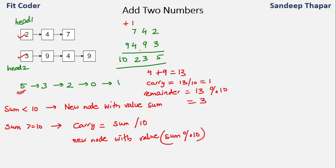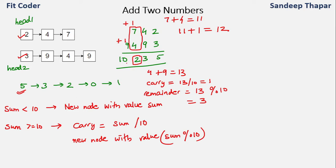Moving to the next nodes, we have 7 plus 4 equals 11, plus the carry of 1 gives 12. Since 12 is greater than 10, the new carry is 12/10 = 1 and the new node value is 12 mod 10 = 2. The addition is elementary mathematics; the only point to take care of is that we have to connect all the nodes we create. We use a previous pointer and whenever we create a new node we connect the previous node to the newly created one.